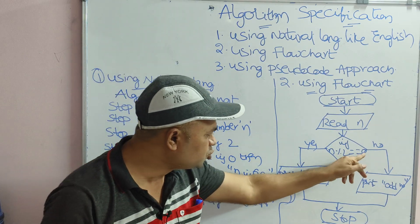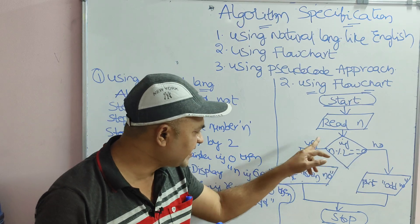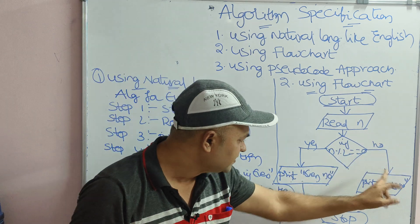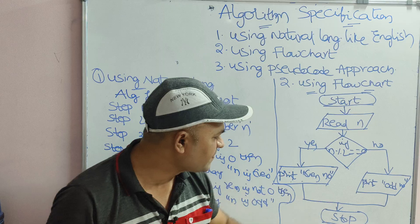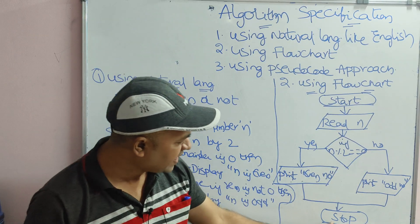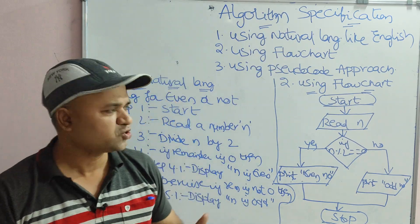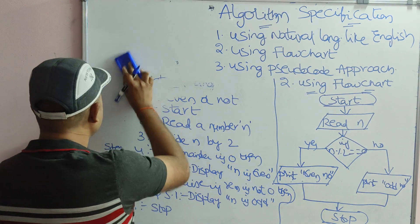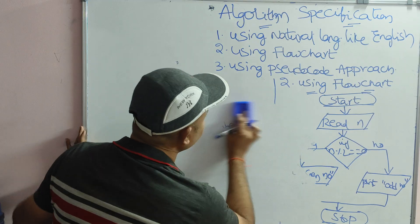If the condition is true (yes), print the number as even number; otherwise (no), print the number as odd number. For printing and reading we use the parallelogram. After determining even or odd, the process is over — stop. These two are the first two notations: natural language like English and flowchart.